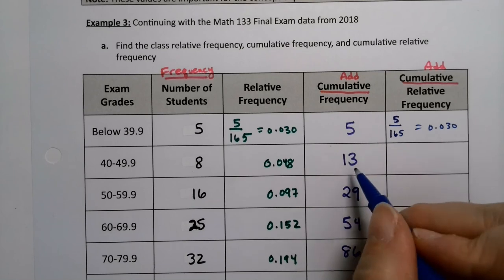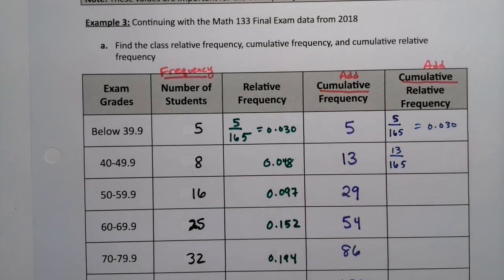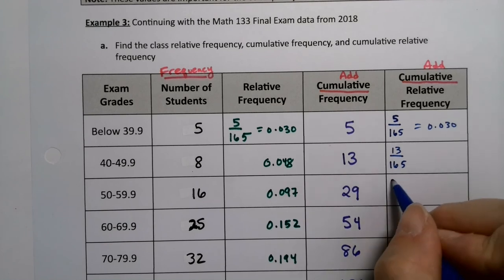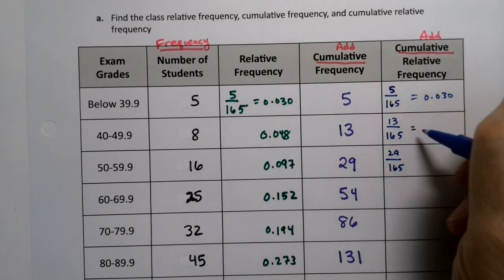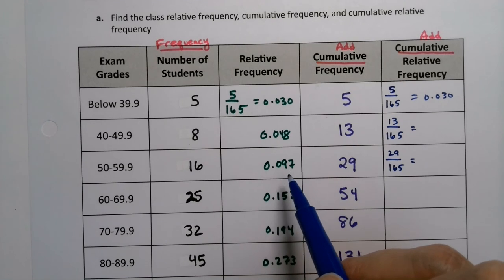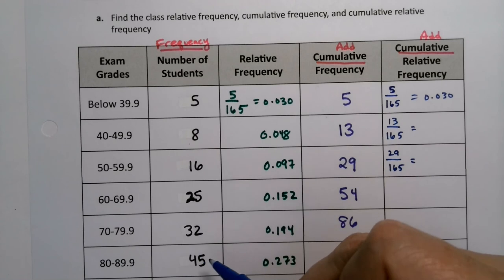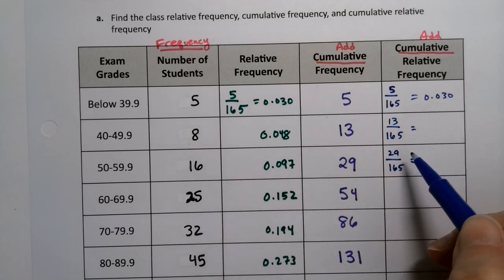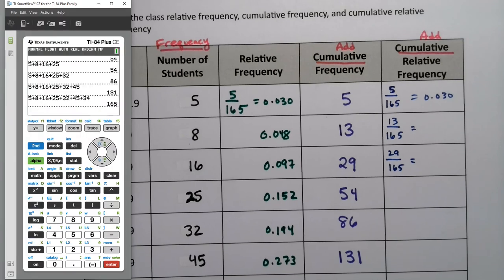But the next one is this cumulative frequency, 13 divided by 165. And then this next one would be 29 divided by 165. That will actually be a little more accurate because if you do the decimals, if you add the decimals, you will have a little bit of rounding error. If you take the cumulative frequencies and just divide by the total, you won't have that rounding error. Well, I can grab a calculator and do all of these. I could take a calculator and take 13 and divide by 165. No problem. I can do that.